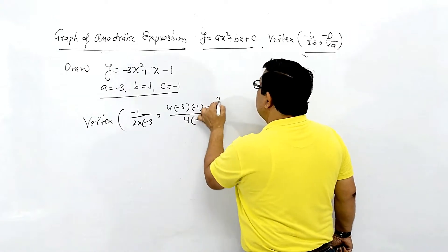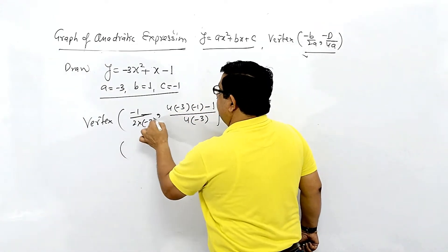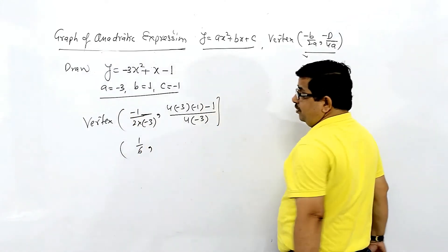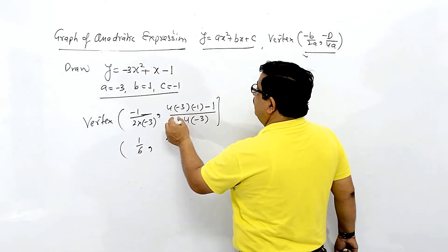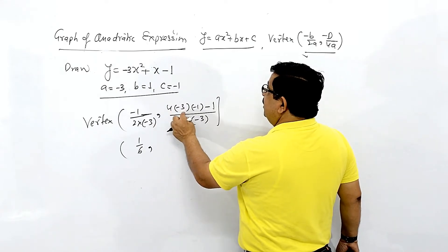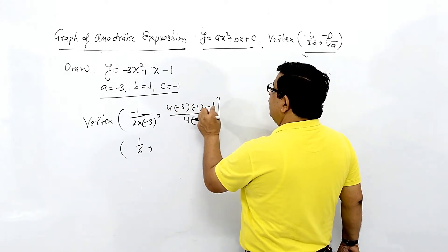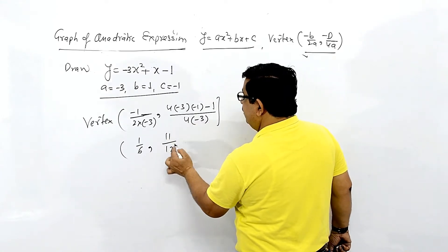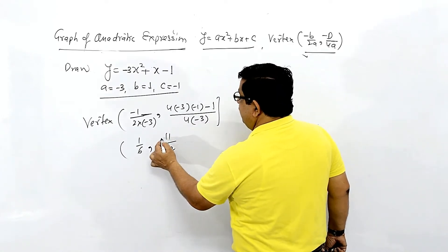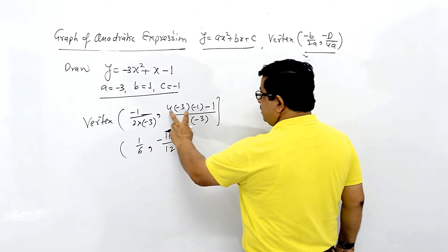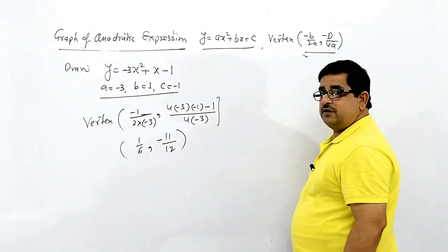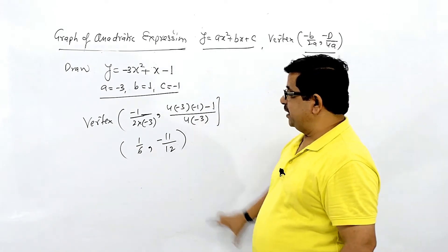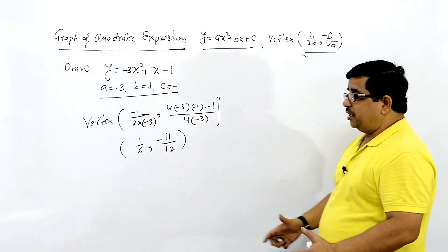The coordinates work out: x = 1/6. For y: 4ac = −12, so 4ac − b² = −12 − 1 = −13, giving −13/4a = −13/(−12) = 11/12... adjusting signs: the y-coordinate is −11/12. So the vertex is (1/6, −11/12).